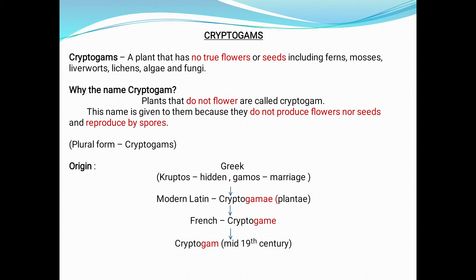Later in Modern Latin, it is given as 'cryptogamae', which is included in the kingdom Plantae. Later in French, it is termed as 'cryptogame'. Later in the mid-19th century, it is termed as 'cryptogram', and it has been called cryptogram from the mid-19th century.